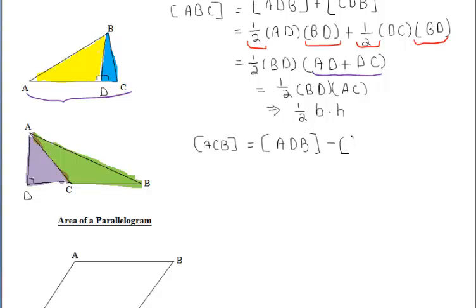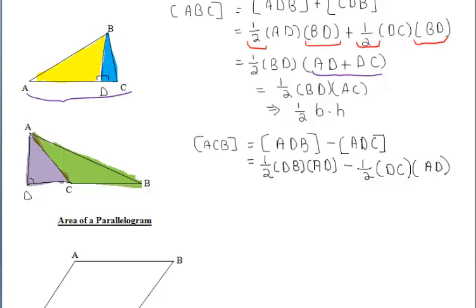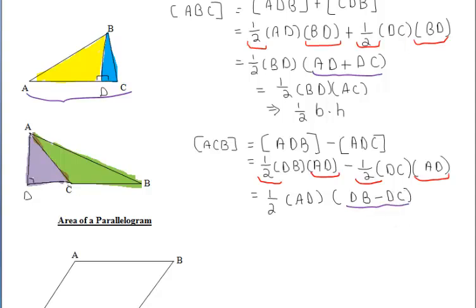So that's our goal. To find the area of triangle ADB, the large right triangle, we do one half of our base DB times our height AD. And then to find the area of triangle ADC, the purple triangle, we do one half of our base DC times our height AD. Just like above, we can factor out one half AD from both of those terms, which leaves us with the quantity DB minus DC. If we take segment DB and subtract off segment DC, we're left with segment CB.